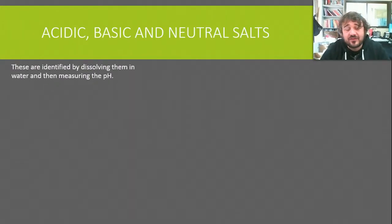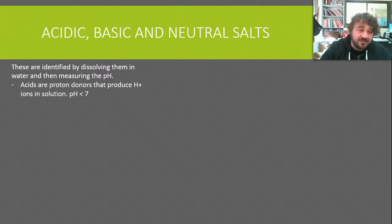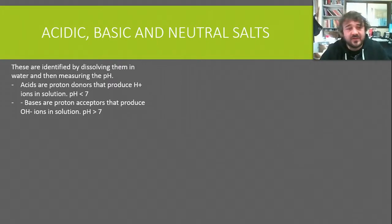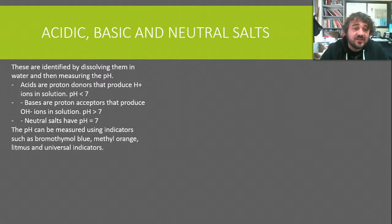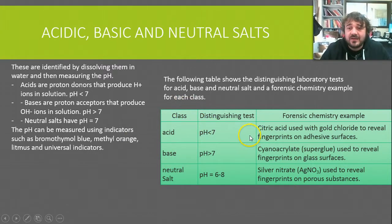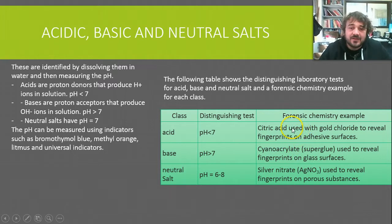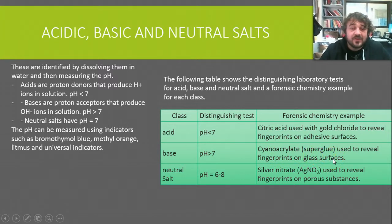For acids, bases, and neutral salts, testing is pretty much the same in both lab and forensic situations. Dissolve the salt in water and measure the pH. Acids are proton donors with pH less than 7; bases are proton acceptors with pH over 7; neutral salts have a pH of 7. We can measure these using indicators like bromothymol blue, methyl orange, litmus, universal indicator, or a pH meter. In forensics, citric acid is used to reveal fingerprints on adhesive surfaces; cyanoacrylate — vaporized super glue — reveals fingerprints on glass; and silver nitrate is used to develop fingerprints on porous substances.